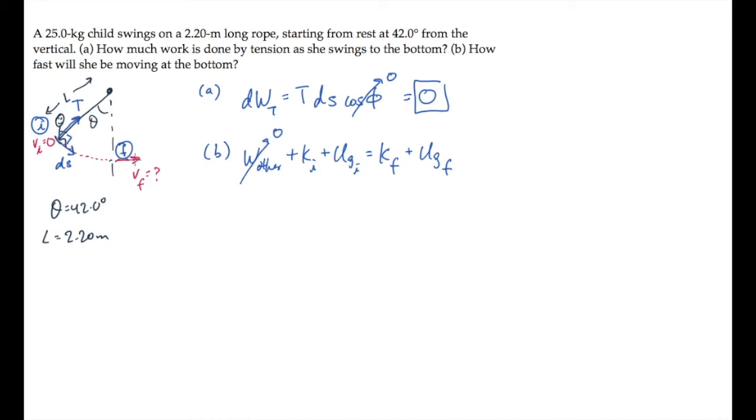So if we let Y equals zero at the bottom of her swing, then she begins with no kinetic energy, she's at rest up there, and she ends with no gravitational potential energy, because she's at the reference for Y equals zero. So we have the initial gravitational potential equaling the final kinetic energy.